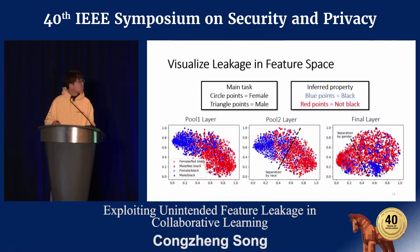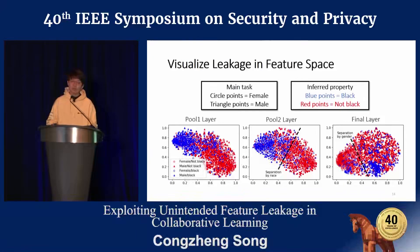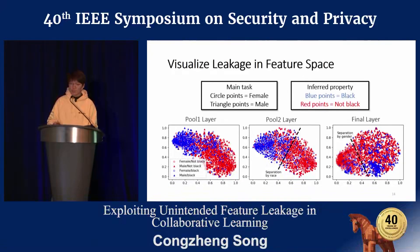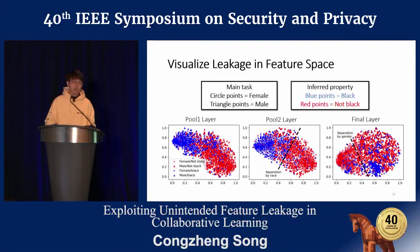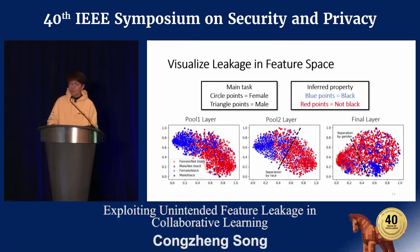Finally, I'll show a visualization of the leakage in the model's feature space. Three plots show the projection of features learned by the model in three different layers — each point corresponds to a data point. The main task is to predict gender, denoted by circles and triangles, and the property is to infer black or not black, shown by blue and red points. The separation between blue and red is visually very obvious in the first two layers, meaning the model learned features for inferring the property in those layers. The separation between triangles and circles appears in the final layer, showing the model also learned to predict gender in the final layers.